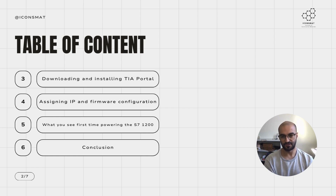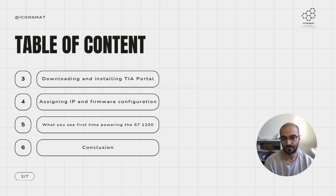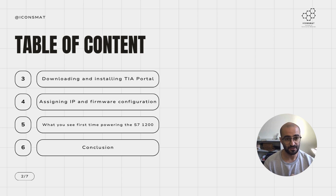After watching this video, we are first going to talk about downloading and installing TIA Portal, what TIA Portal basically is, assigning IP and firmware for configuration purposes, and what you should see the first time you're powering up your S7-1200. There are some modification and installation instructions you have to follow in order to get to the point where you can actually download your ladder logic and program to the PLC and see the expected outcome.